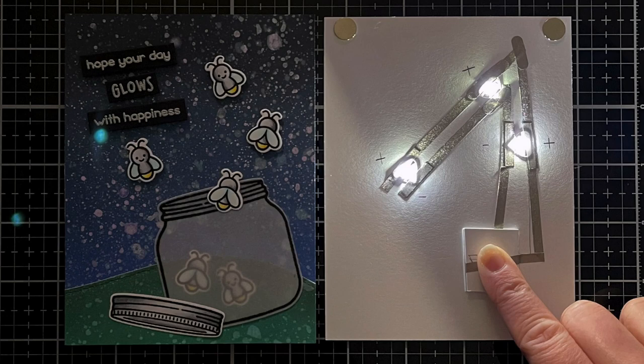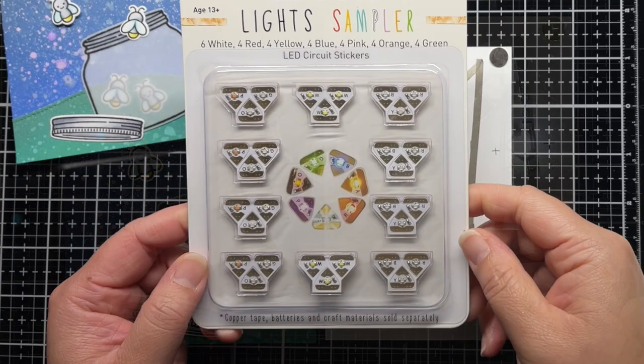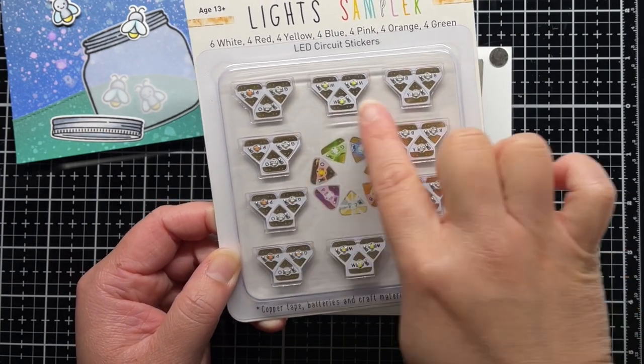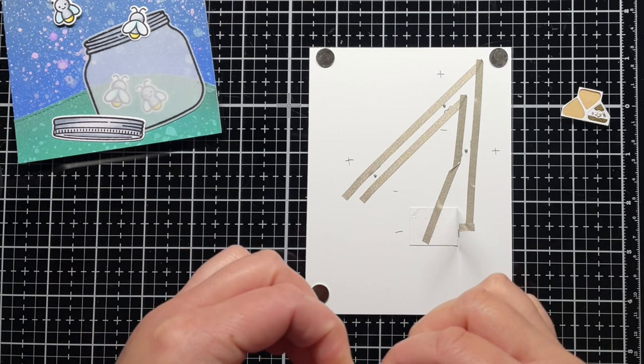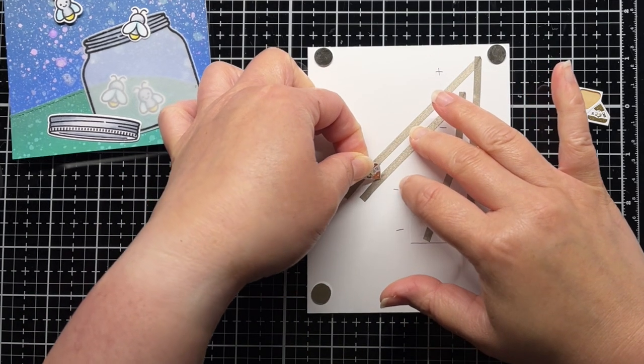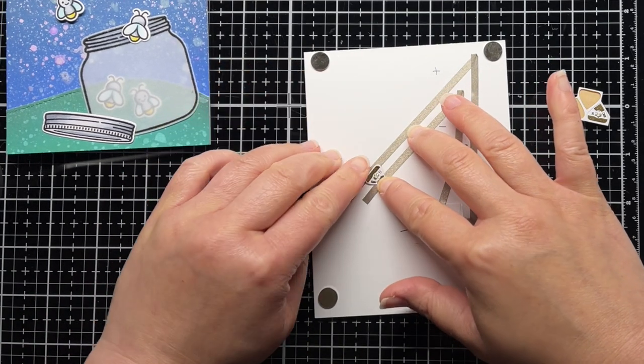For the first videos in this series, we've been using our original white LED stickers, but today I'm changing things up with our gorgeous colored LED stickers. They function the same as our white stickers, but really glow in beautiful shades of red, yellow, blue, pink, orange, and green.